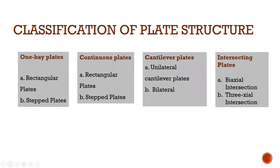Classification of plate structures includes: one-way plates and two-way plates. Under two-way plates, types include rectangular plates, stacked plates, continuous plates, cantilever plates, and intersecting plates, with variations such as unilateral, bilateral, and crossing intersections.